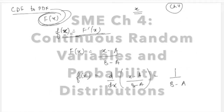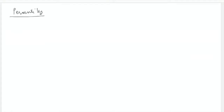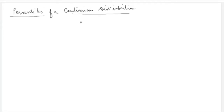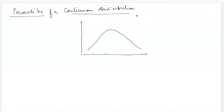Today I'm going to discuss a few more topics from the continuous distribution. Let's start with the first concept: percentiles of a continuous distribution. The probability distribution function of a continuous distribution looks like a smooth curve — a typical distribution we can visualize in a continuous case.